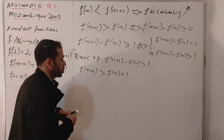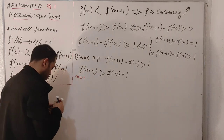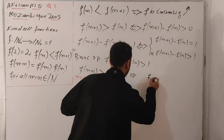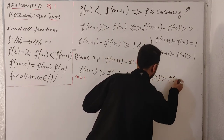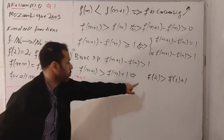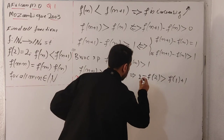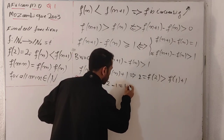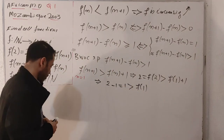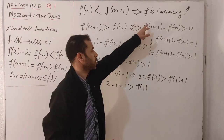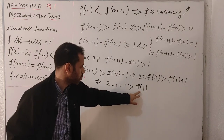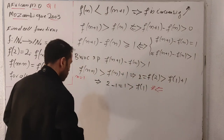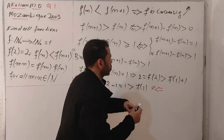Replacing n with 1, we get f(2) ≥ f(1) + 2. Since f(2) = 2, this gives 2 − 2 = 0 ≥ f(1), meaning f(1) ≤ 0, so f(1) = 0. But f maps to the natural numbers, so f(1) = 0 is impossible — a contradiction. Therefore this case is ruled out.